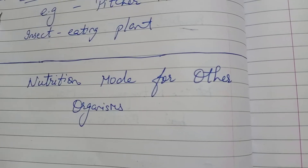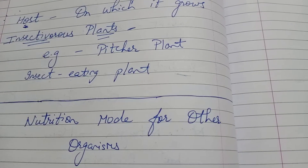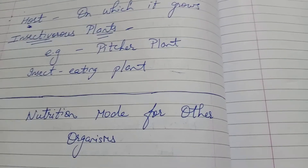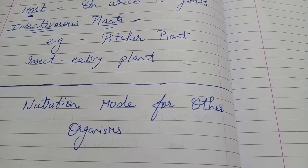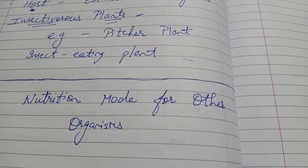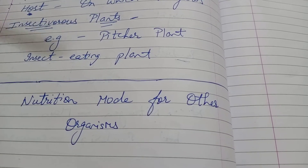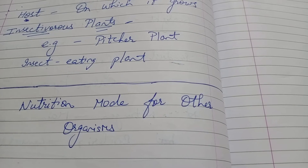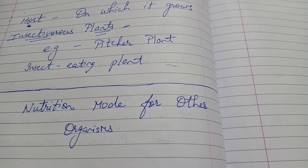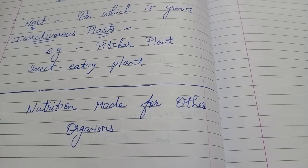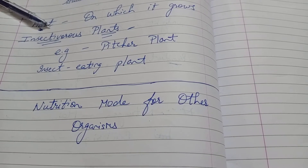Another type of plant is insectivorous plants. Insectivorous plants feed on insects for their nitrogen requirements, as they cannot convert nitrogen gas into a usable form. A very common example is the pitcher plant. The pitcher plant is an insect-eating plant — it is a modified pitcher with a lid, meaning it has a cover. It opens its lid, the insect goes inside, and it takes the juices from the insect, which mostly contain nitrogen. Such plants are called insectivorous plants.